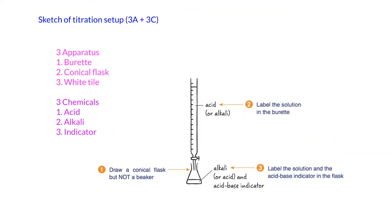So for sketching a titration setup, this is so common to be asked in public exam. So I recommend you to remember, for a titration setup, you have to have three apparatus and three chemicals involved in it. So basically, the three apparatus, that will be the burette, you have conical flask, and you should have a white tile.